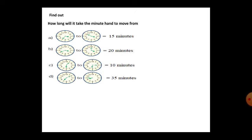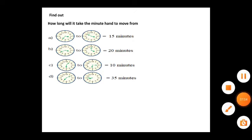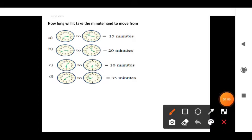Here the minute hand is at 8 and moves to 12. Count: 5, 10, 15, 20 — so 20 minutes have passed. In the next example, the first clock has the minute hand at 1, and the second clock has the minute hand at 3. How many minutes have passed? Count: 5, 10 — so 10 minutes.